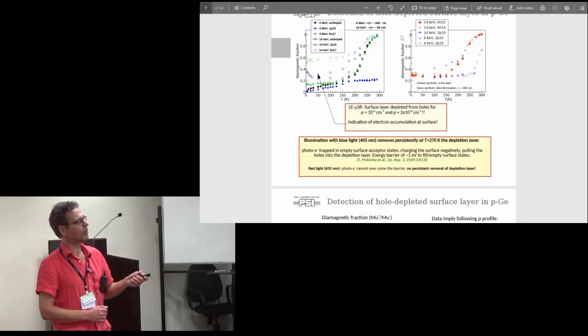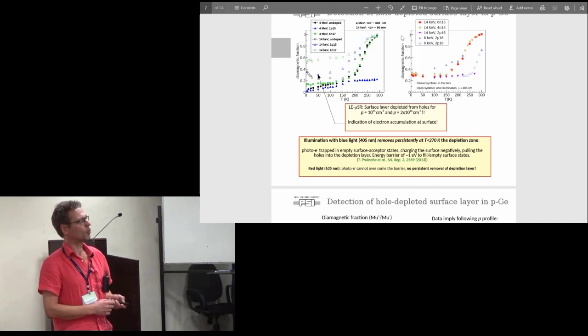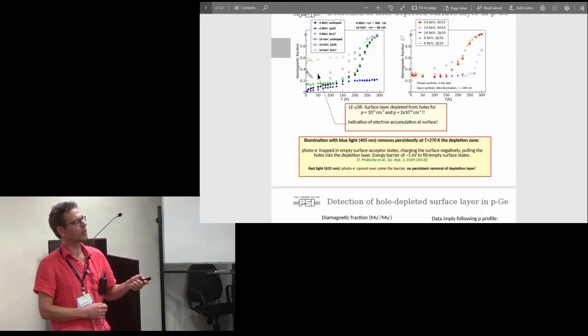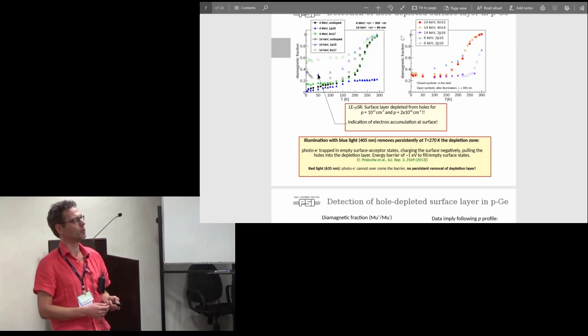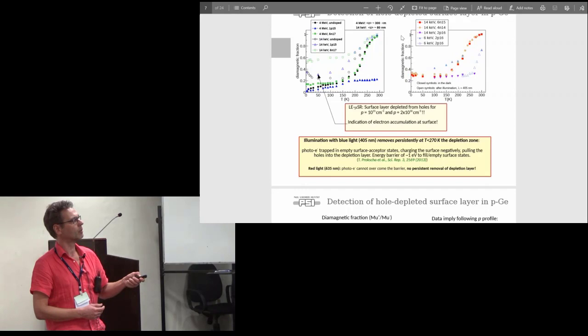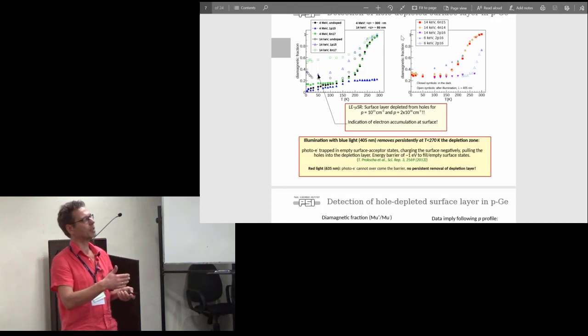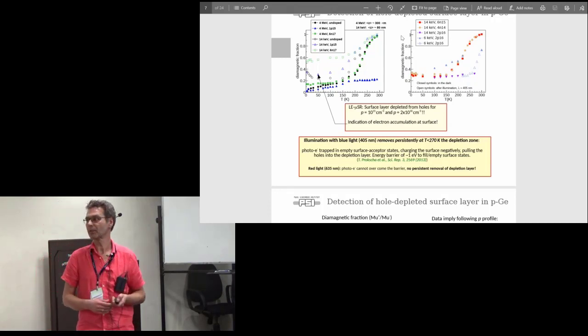We have hole depletion in at least 100 nanometers in this 10 to the 15th per cubic centimeter doping. Then we went to a sample which had a higher doping level, 10 to the 16th. If we go to 80 nanometers we get this curve here. We don't see this formation of muonium minus, so at the depth of 80 nanometers we have the holes preventing that we can see muonium minus. But if we go to 6 keV which is at a depth of 40 or 50 nanometers, we still can see this kind of increase. So at the depth of 40 or 50 nanometers there are still no holes.